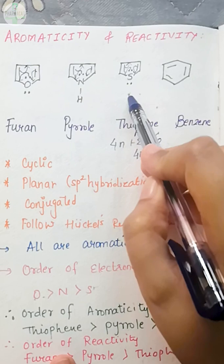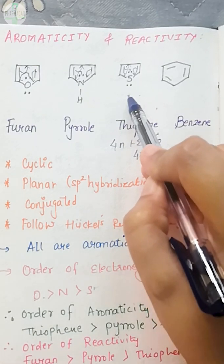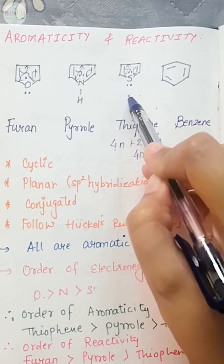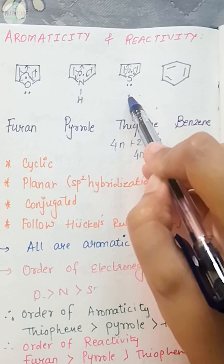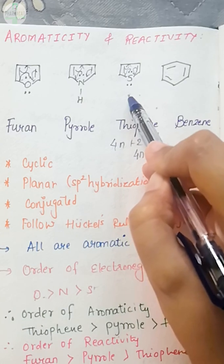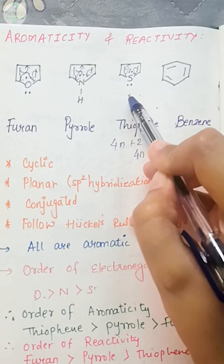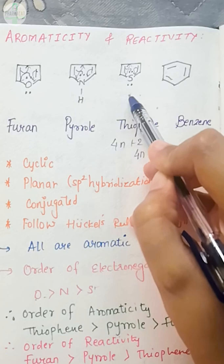In this case, thiophene is the most aromatic because conjugation happens easily in it. So being the most aromatic, it is the most stable. Now if it is the most stable, that means it will participate very little in reactions or will not participate. That means its reactivity will be the lowest.